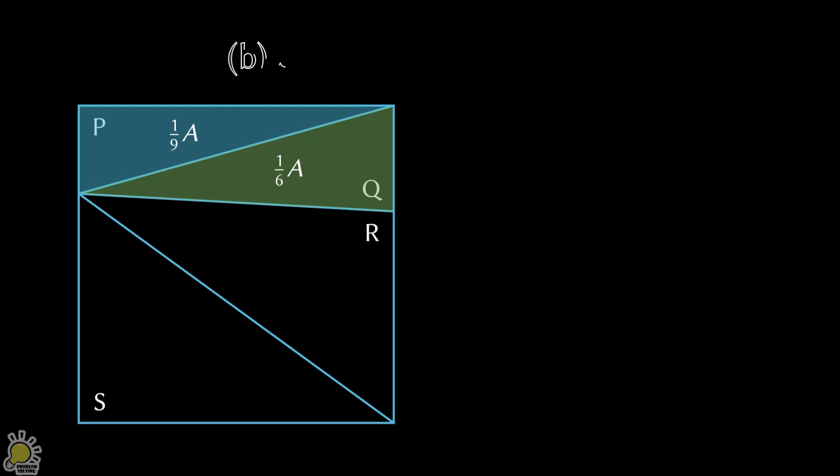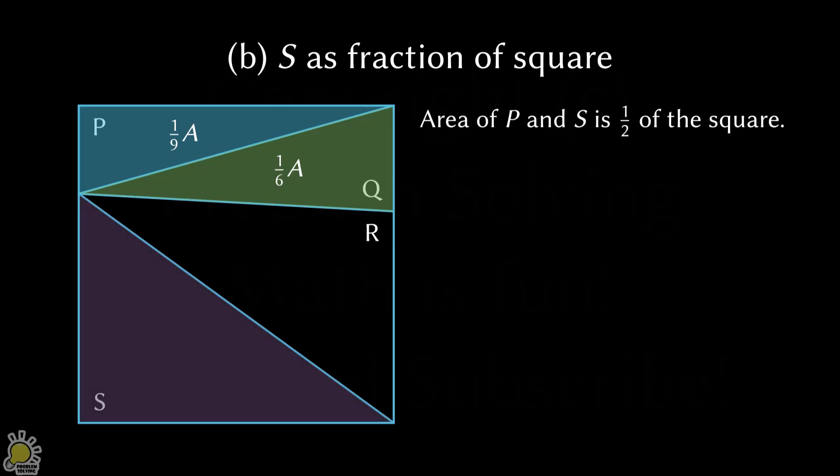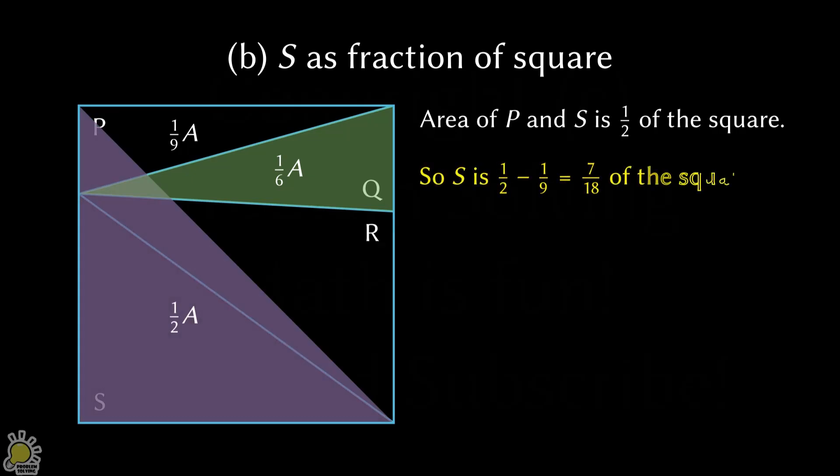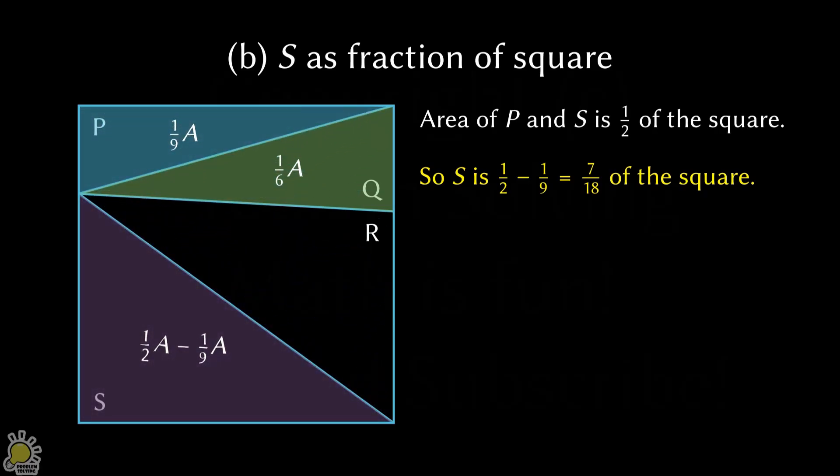Next, Part B. We note that the area of P and S make up one-half of the square. We can deduce this by shearing P downwards. Its area is preserved as the height is the same. Combined with S, it occupies half the square. So, we conclude that S is one-half minus one-ninth, which works out to seven-eighteenths of the square. And that answers Part B.